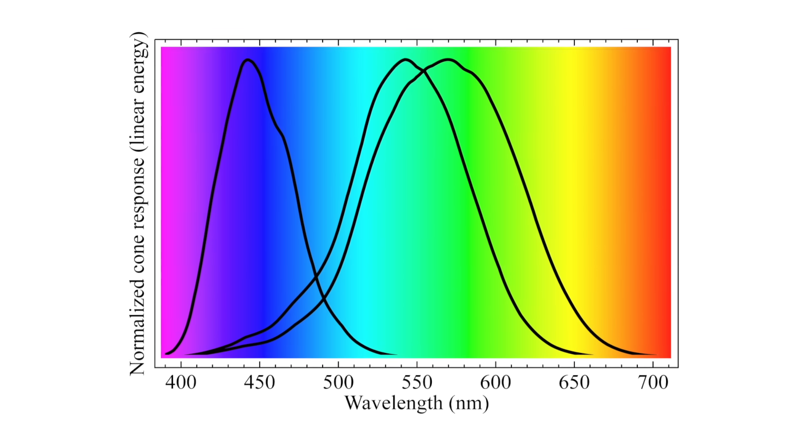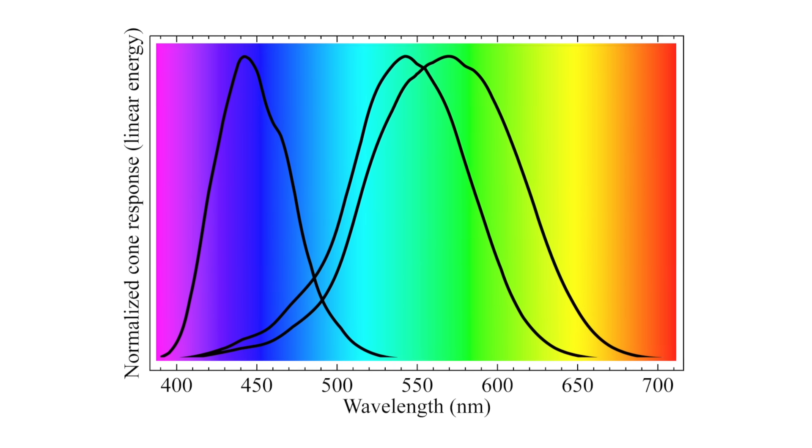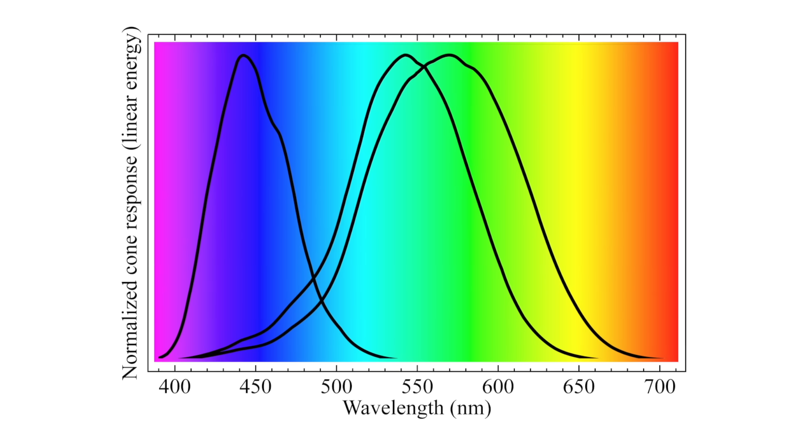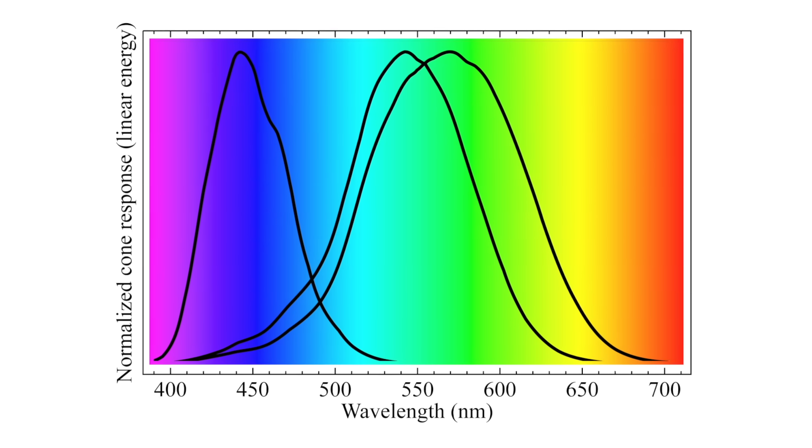Two of them are most sensitive in the green region, although one of them has some ability to see red light. The other cone is sensitive to blue. That's the problem. The cones that see blue are pretty good at seeing blue, but they don't do so well with violet.